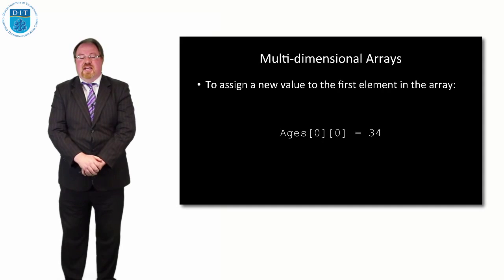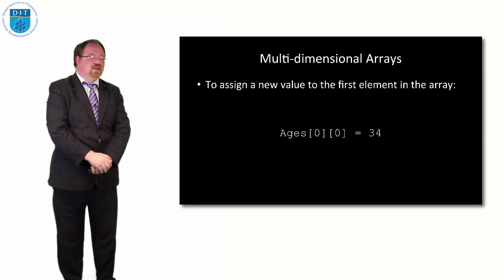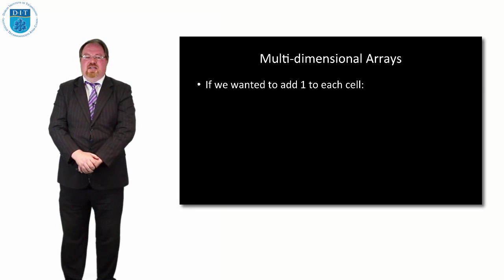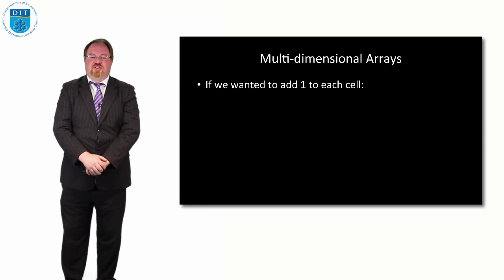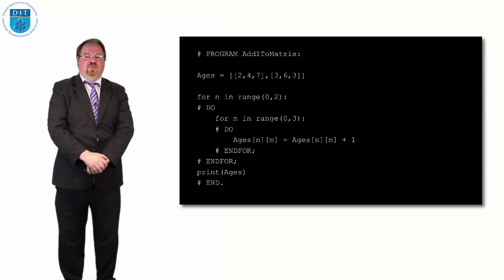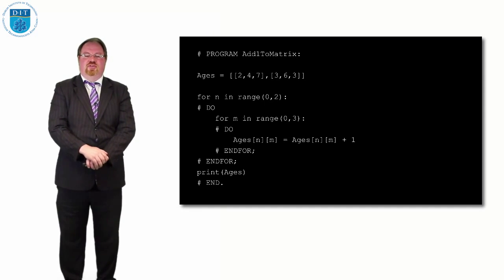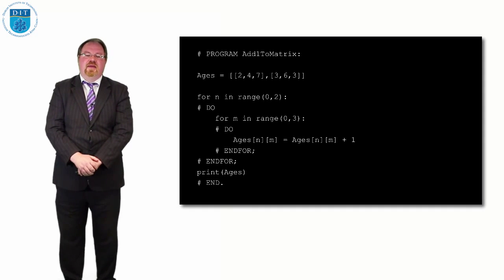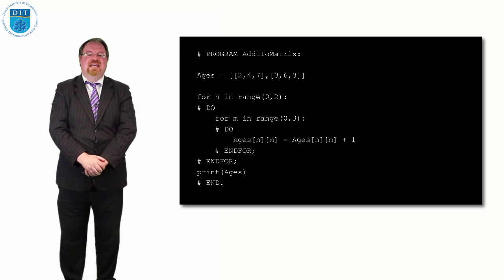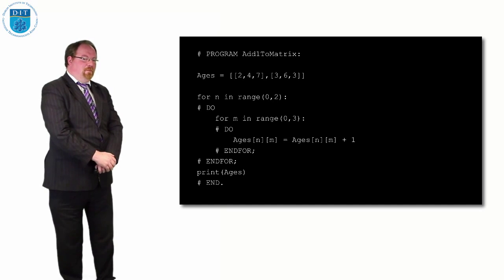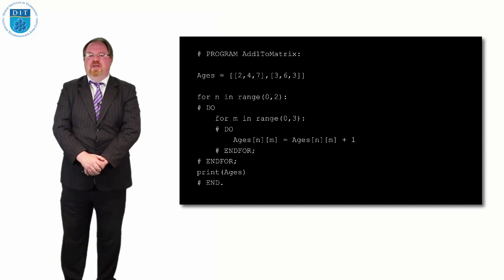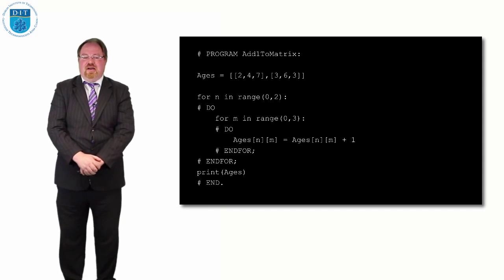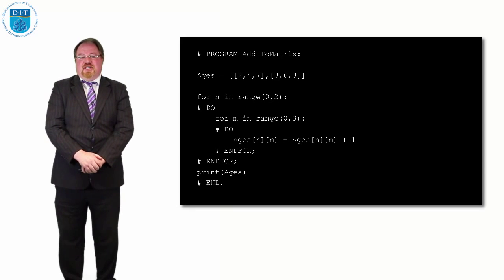If I want to add one to each cell in the array, we'd use a single loop for a single dimensional array. So for a two-dimensional array we use two loops. The outer loop goes from 0 to 2, so 0 and 1. The inner loop goes from 0 to 3, that's 0, 1, 2. And for each one of those, the outer loop is n, the inner loop is m. For ages[n][m], ages[n][m] gets n m plus 1. That's all it is. And that will add one on.